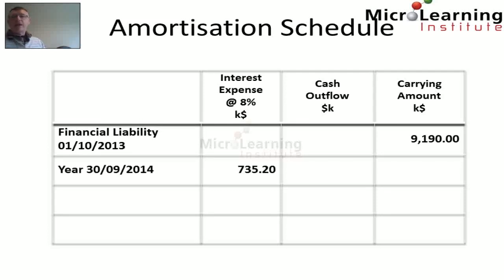In the year ended 30th of September 2014, we accrue interest at the market rate of 8% on the $9.19 million, giving an interest expense of $735,200 to the P&L of Bertrand. In line with the schedule of payments, we pay $500k off this liability, so the financial liability on the books of Bertrand at year ended 30th of September 2014 is $9.425 million.